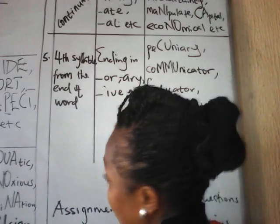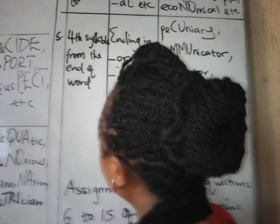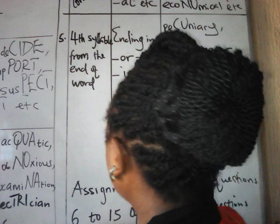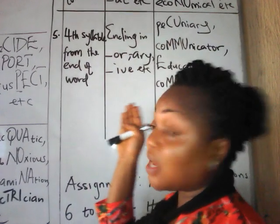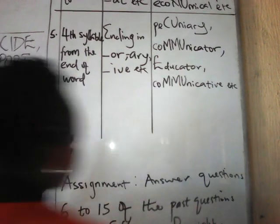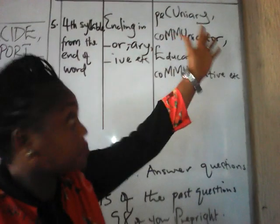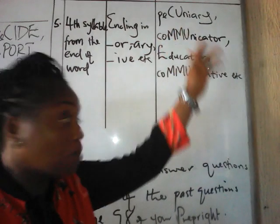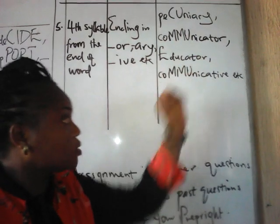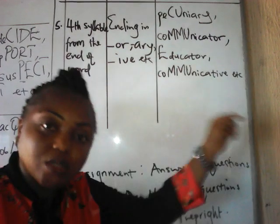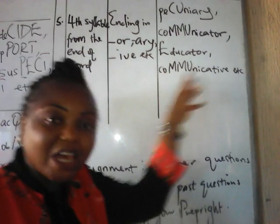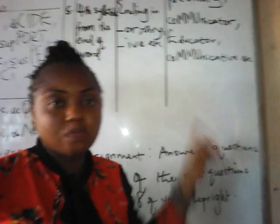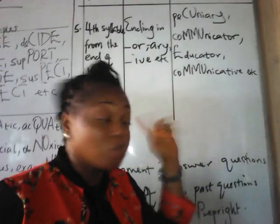The last rule is that you stress the fourth syllable from behind for words ending in -OR, -ARY, and -IVE. Examples include: pecuniary, communicator, educator, and communicating.